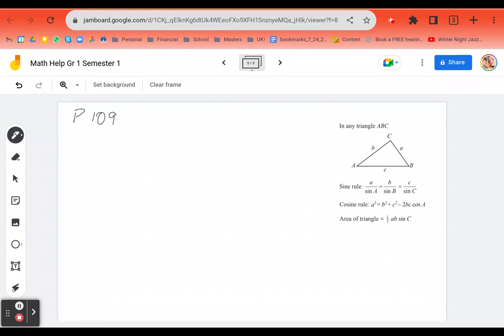Okay, we're on page 109 now and it's the sine and cosine rules. So it's kind of like grown-up trig because we're not dealing with right-angled triangles.